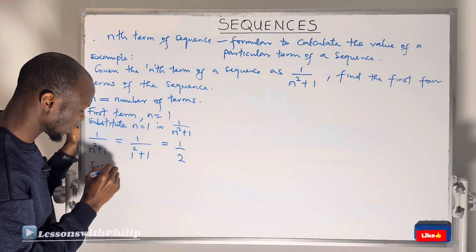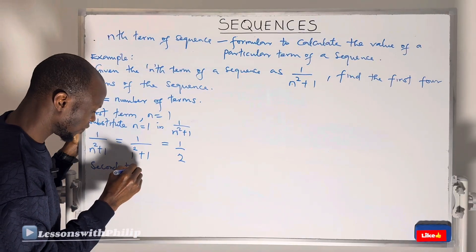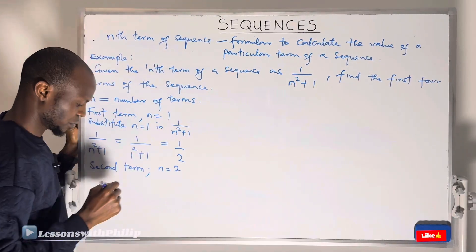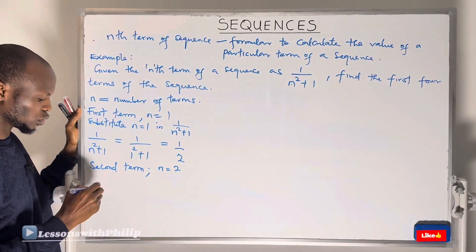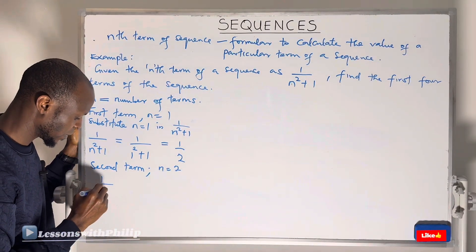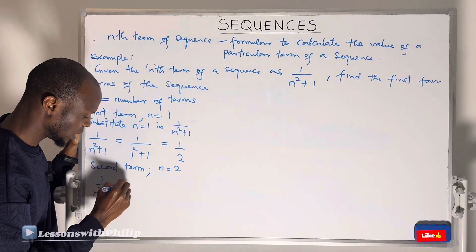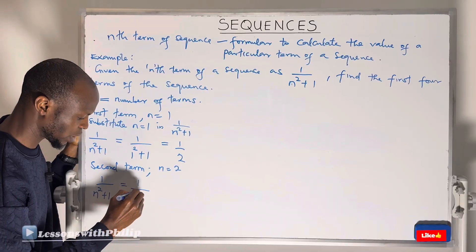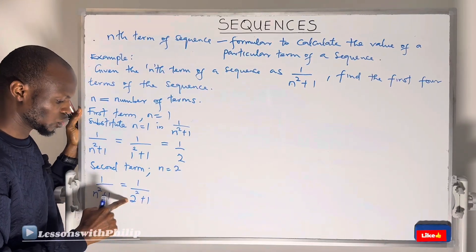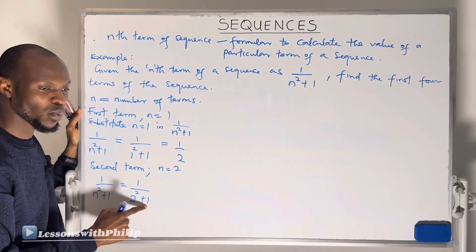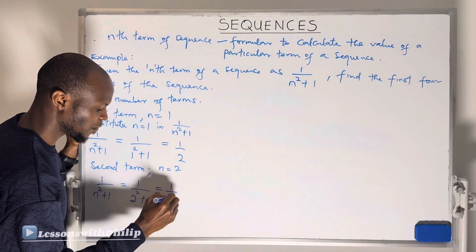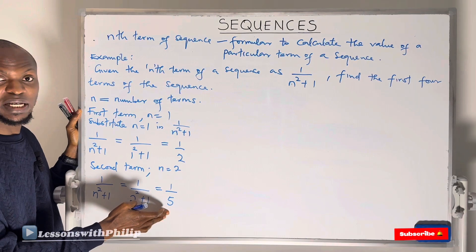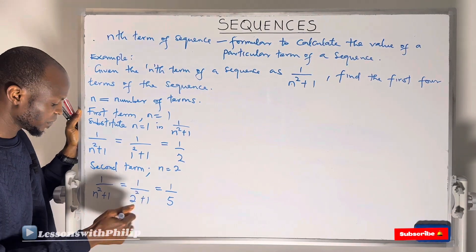For the second term, N = 2. Substituting N = 2 into 1 over (N² + 1): that gives 1 over (2² + 1) = 1 over (4 + 1) = 1 over 5. So the second term is 1/5.